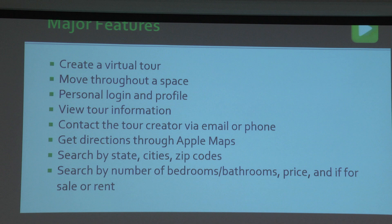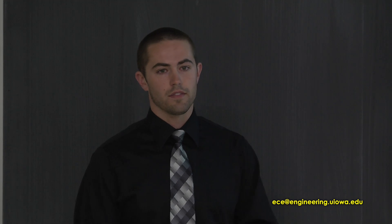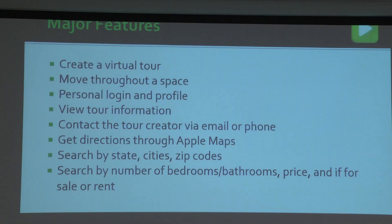These are the major features of Walkthrough: you can create a virtual tour with two viewpoints and four pictures at each viewpoint. You can move throughout a space by clicking forward, right, and left just like Google Street View. You have a personal login and profile with edit and registration. You can view tour information, contact the tour creator via email and phone, and get directions through Apple Maps. Search is available by state, city, zip code, and also by number of bedrooms, bathrooms, price, and whether it's for sale or for rent.